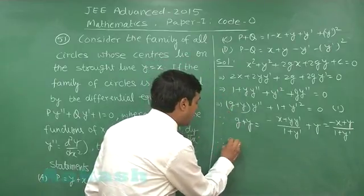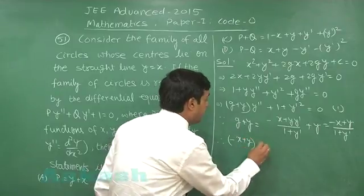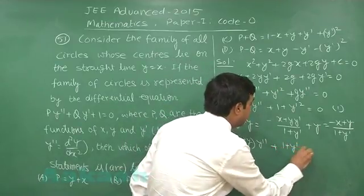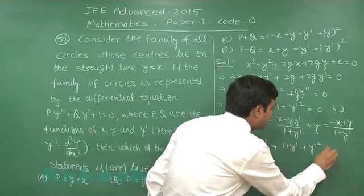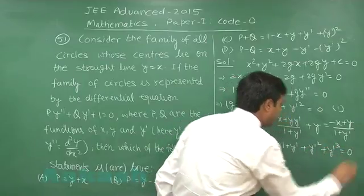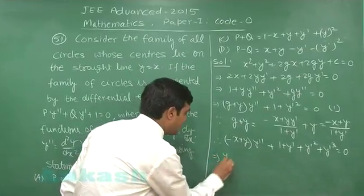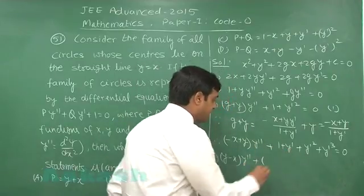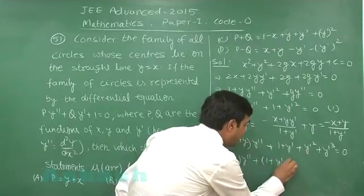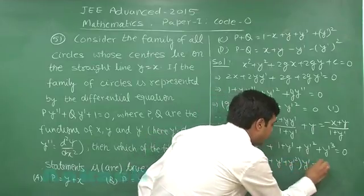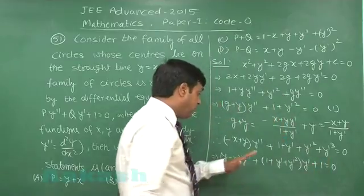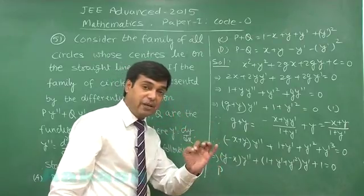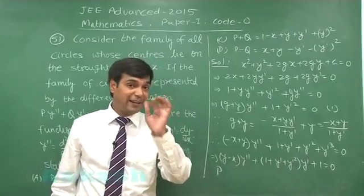Therefore we have −(x + y)·(d²y/dx²) + 1 + y' + (y')² + (y')³ = 0, which can be rearranged as (y − x)·(d²y/dx²) plus the coefficient for y', which is 1 + y' + (y')², and the last term is 1. We can compare this with the given equation p·(d²y/dx²) + q·(dy/dx) + 1 = 0.